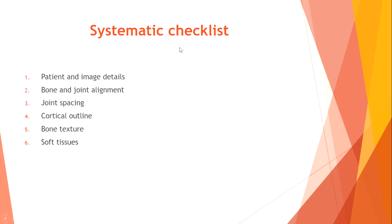Systematic checklist. When assessing musculoskeletal x-rays, review the following: patient details and image details, bone and joint alignment, joint spacing, cortical outline, bone texture, and soft tissues.